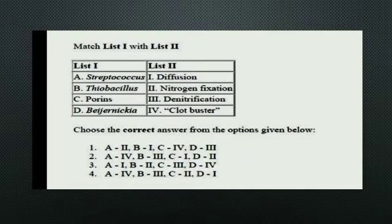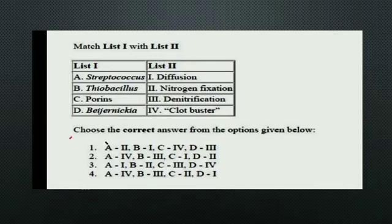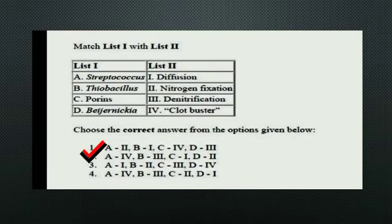The next question is a match the following. List 1 consists of Streptococcus, Thiobacillus, Porins, and Penicillin. List 2 consists of Diffusion, Nitrogen fixation, Denitrification, and Clot buster. The right answer is Option 2: Streptococcus is a clot buster, Thiobacillus is involved in denitrification, Porins are associated with diffusion, and Penicillin with nitrogen fixation.